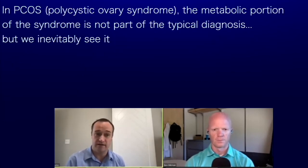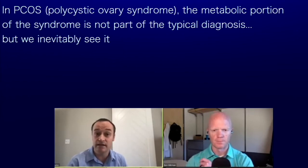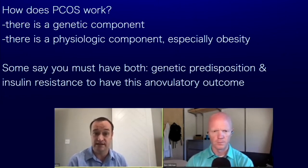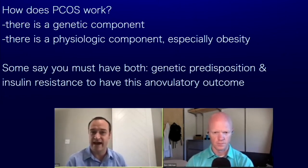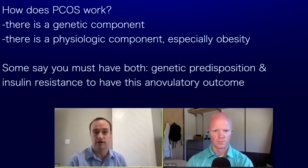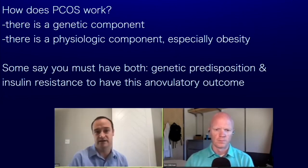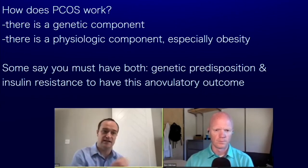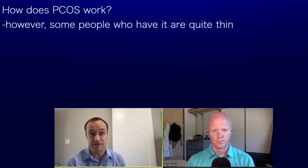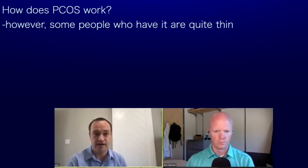In PCOS, the metabolic portion is not the actual diagnostic criteria, but we inevitably see it. How PCOS works is still up for debate — there's definitely a genetic component, but also a physiologic component, particularly related to obesity. Some say there's a two-hit hypothesis: a genetic predisposition to insulin resistance and oligo-ovulation, and then a metabolic tipping point. Not all people are the same with PCOS — some are quite thin and have it, some have more body fat.